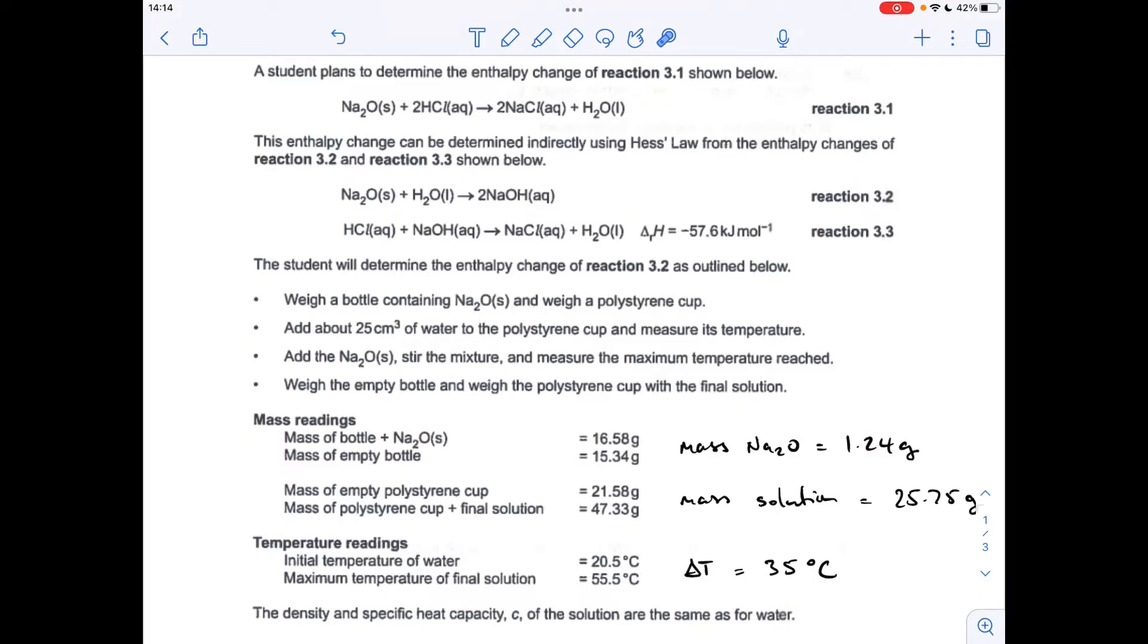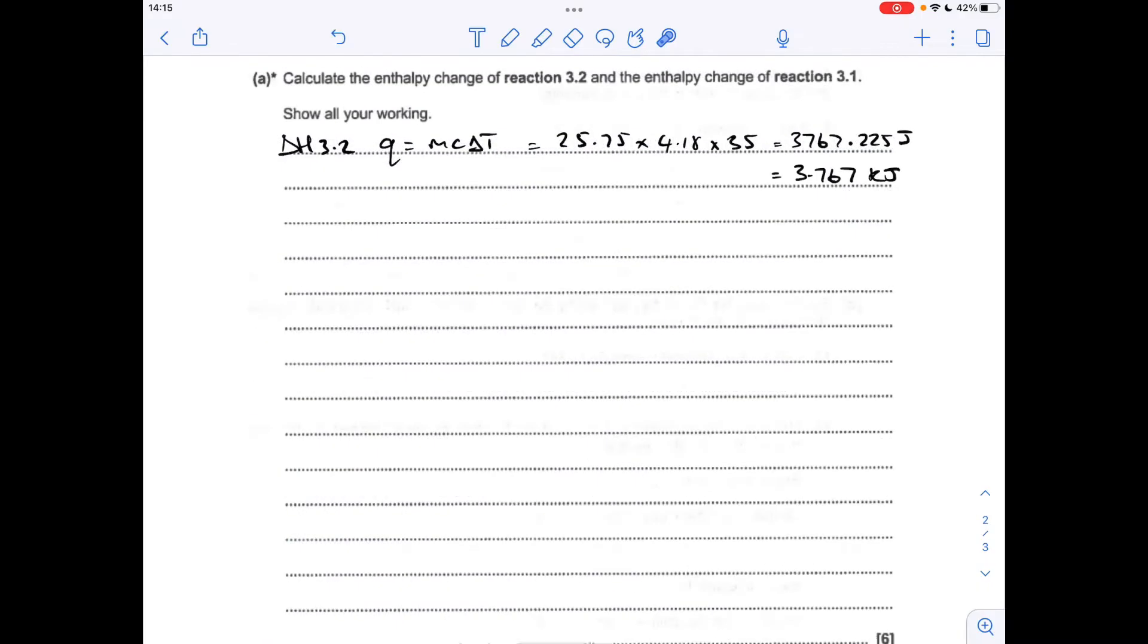Delta T is obviously the difference in those two temperatures there, so that's 35 degrees C. So the first thing we need to do to get the delta H for 3.2 is do Q equals mc delta T, so the mass of the solution times specific heat capacity of the solution, told it's the same as water, times delta T, 35. So you get that many joules, but we've got to put it into kilojoules, so 3.767 kilojoules.